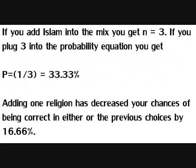If you add Islam into the mix, you get n equals 3. If you plug 3 into the probability equation, you get p equals 1 over 3 — that's one third, or 33%. Adding one religion has already decreased your chances of being correct in either of the previous choices by 16 and two thirds percent, or 16.66%.